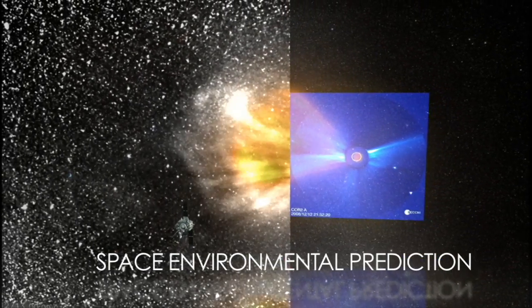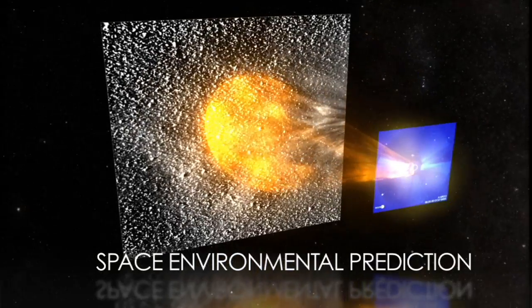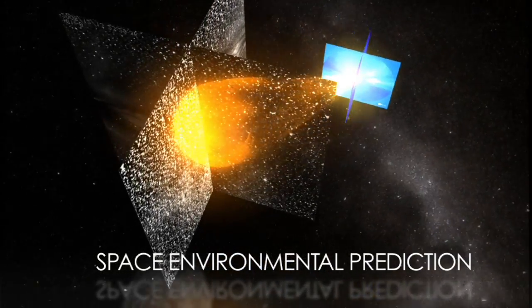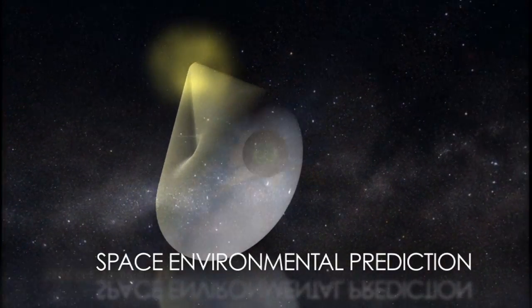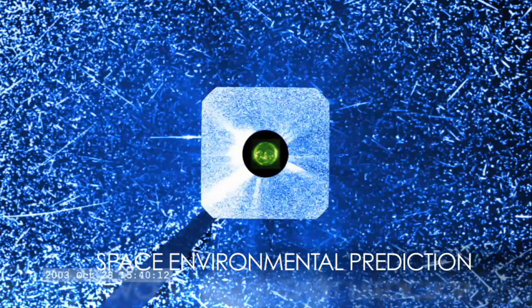By taking high-resolution images of the Sun, modeling solar storms, and using multiple observatories, NASA will improve our ability to predict not only when solar storms will hit, but how they will affect our daily lives.